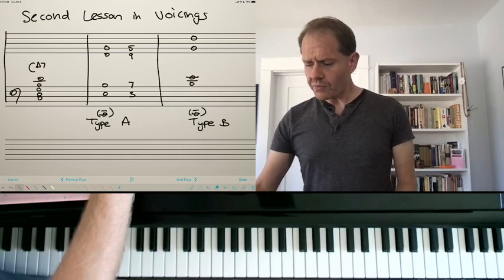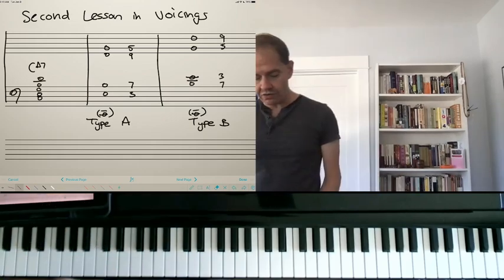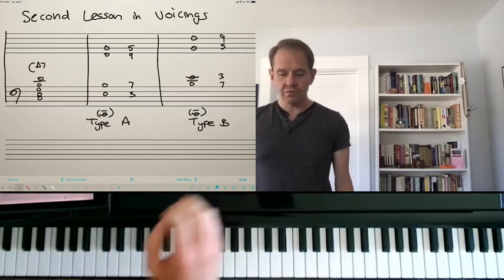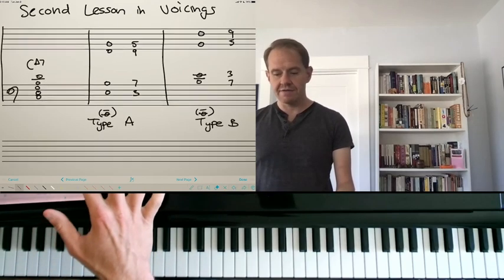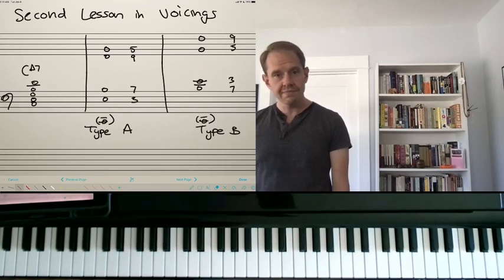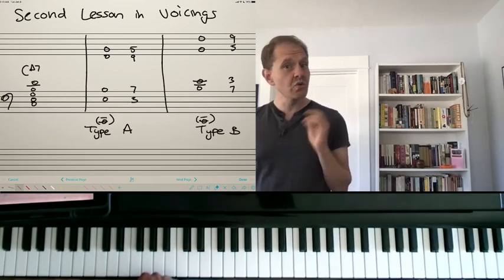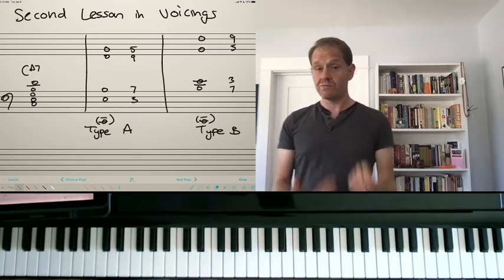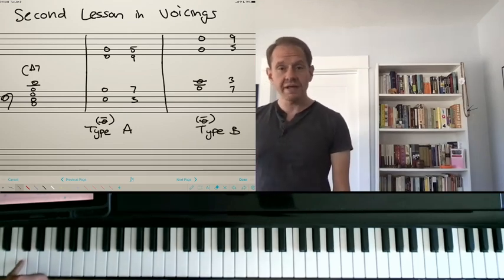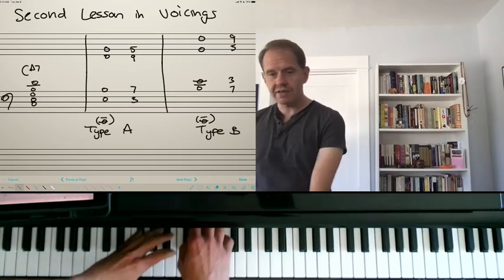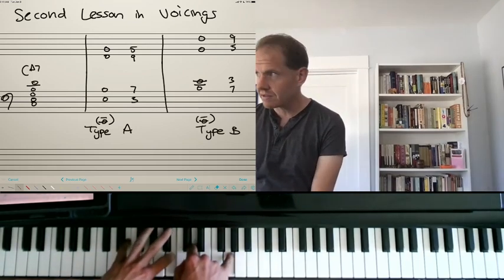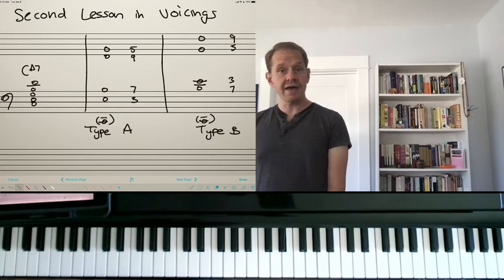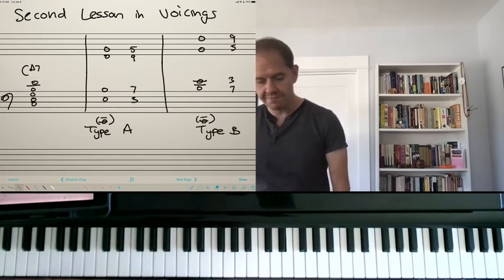But to recap what we did last time is that we took this kind of blocked out chord, C major 7, and we created what we call type A and type B voicings. So zoom it in just a little so hopefully you can see. This bass note is in parentheses because you're not going to play that. The bass player is playing this. So these voicings are not meant for solo piano. They're meant for playing with a band. So the bass will play the root. You don't play the root. And you play the third and seventh in your left hand, the ninth and fifth in your right. There's type B. This was type A.